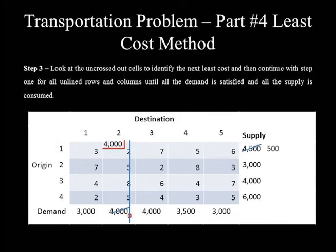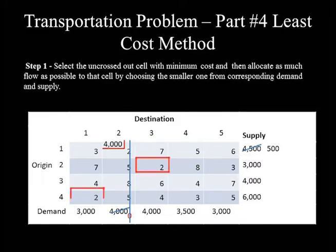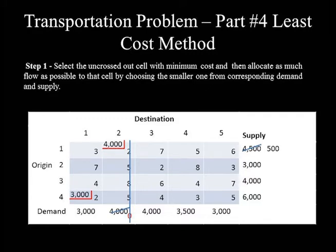Step 3: Among the uncrossed-out cells, Origin 2 to Destination 3 and Origin 4 to Destination 1 are still tied with a unit cost of 2. The amount allocable to each of these cells is the same — 3,000 — so they are again tied. In such a case, either cell may be chosen. For this problem, we use Origin 4 to Destination 1, and the smaller of supply and demand, that's 3,000, is allocated to this cell.